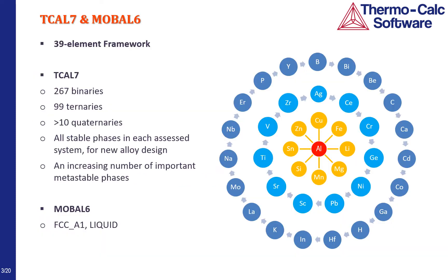The TCL7 and MobileAL6 databases are developed in a very large framework and they contain 39 elements. In TCL7, 267 binaries and 99 ternaries are assessed. It contains all the stable phases that form in each of the assessed systems, and the most important metastable phases that precipitate in either solidification or aging treatments. MobileAL6 contains mobility data for the aluminum matrix phases including FCC-A1 and liquid.